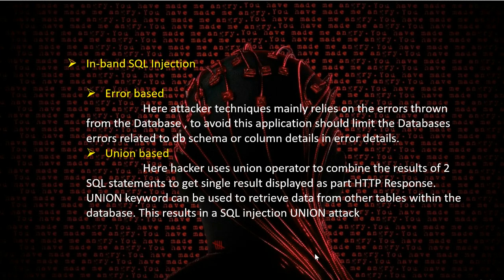In union-based attacks, the attacker uses the UNION operator to combine the results of two SQL statements to get a single result displayed as part of the HTTP response. Since the UNION keyword is mainly used to retrieve data from other tables within the database, if this executes successfully, it confirms that union-based attacks are possible.